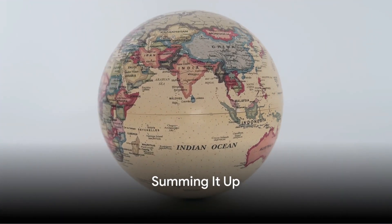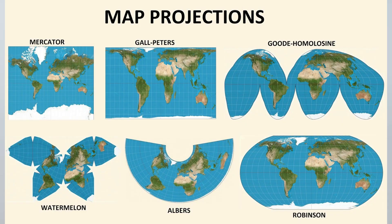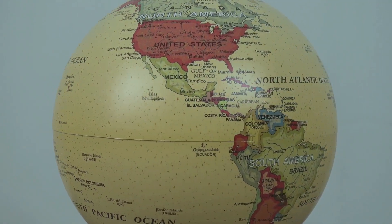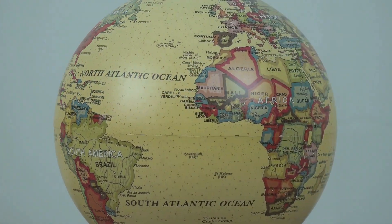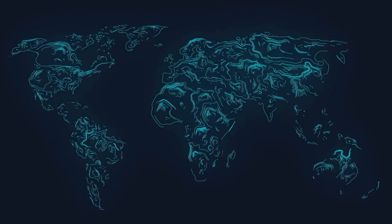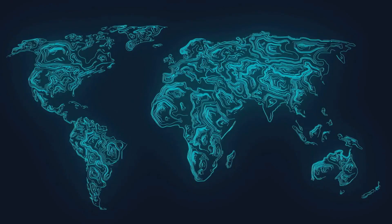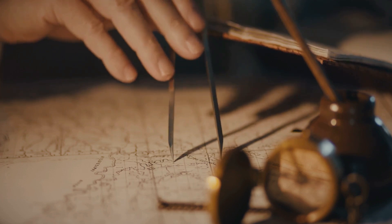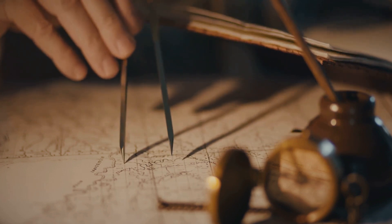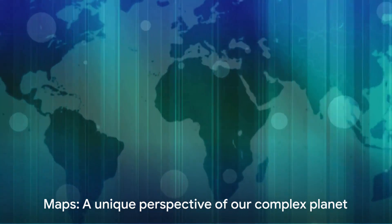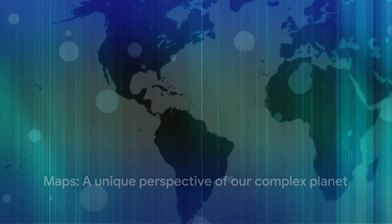In conclusion, no single map projection can accurately represent the entire world. Each of them, whether it's the Mercator, the Peters, or the Robinson, has its strengths and weaknesses, and they all bring something unique to the table. The Mercator projection is fantastic for navigation due to its preservation of angles and shapes, but it tends to greatly exaggerate the size of regions closer to the poles. The Peters projection is a champion at showing equal areas, great for comparing sizes, but it distorts shapes in the process. The Robinson projection is a compromise between the two, aiming to balance area, shape, and size, creating a more visually pleasing map that's somewhat closer to how we perceive our world, but it's not perfect either. Each projection has a purpose and is useful for different applications, from navigation to education.